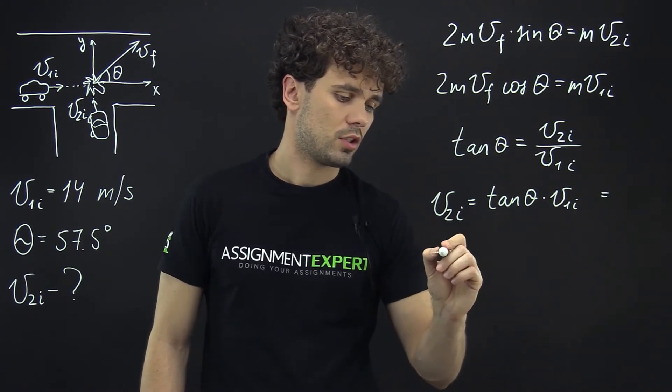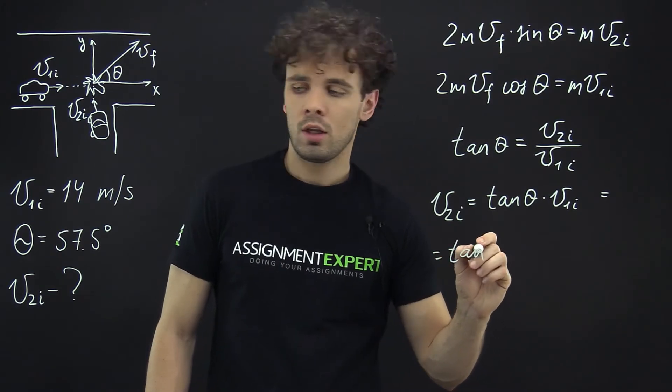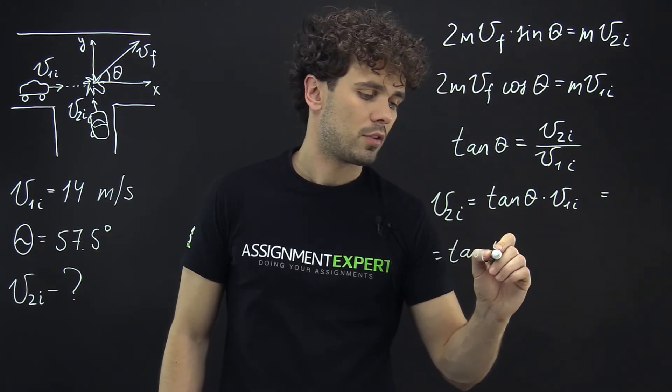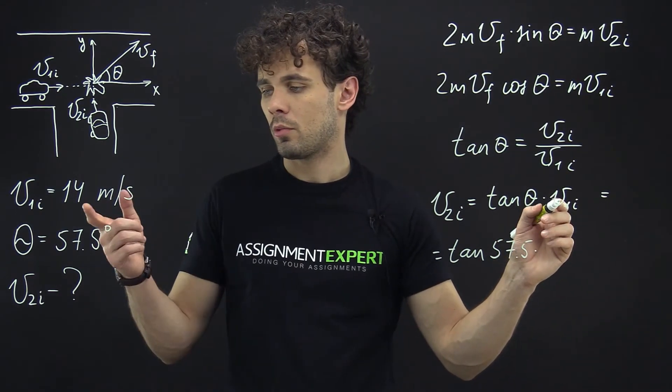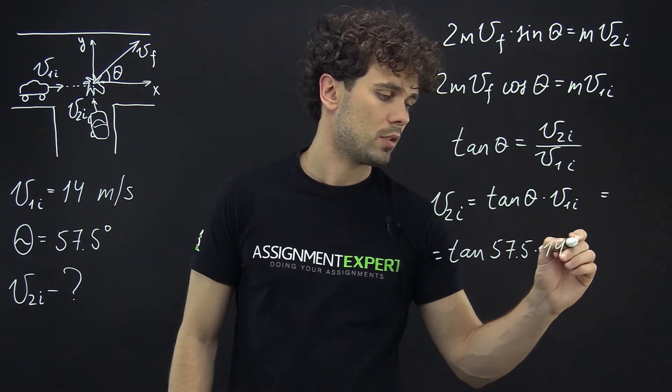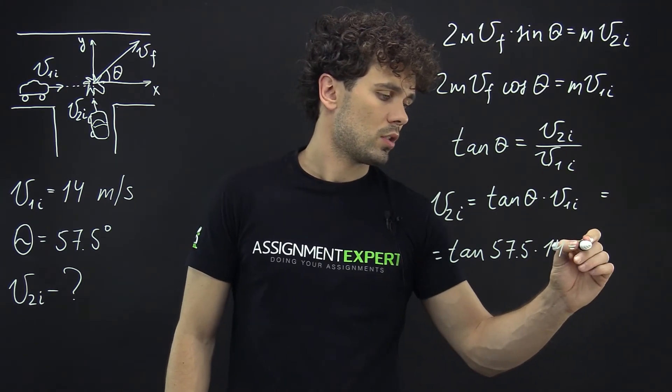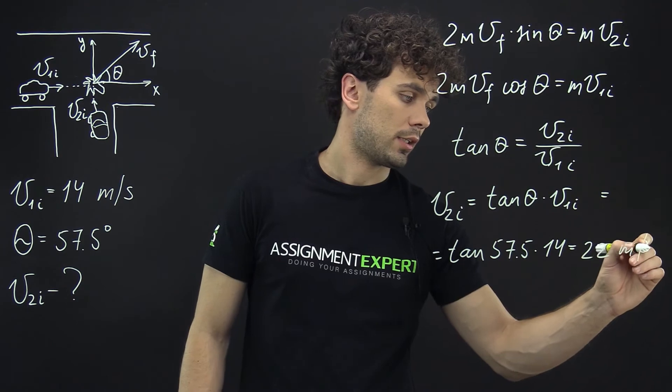And this gives us tangent of 57.5 degrees times the speed of the first car which is 14 meters per second, and this gives us approximately 22 meters per second.